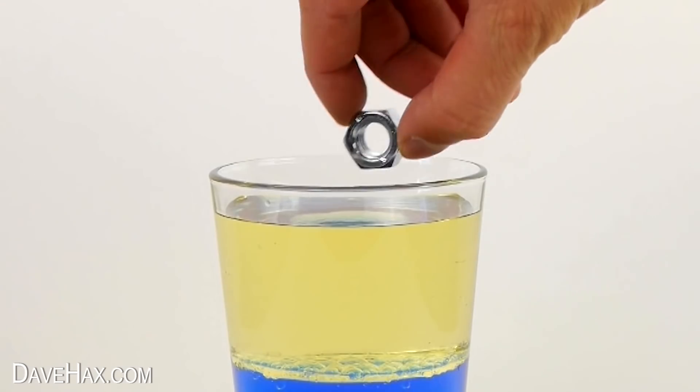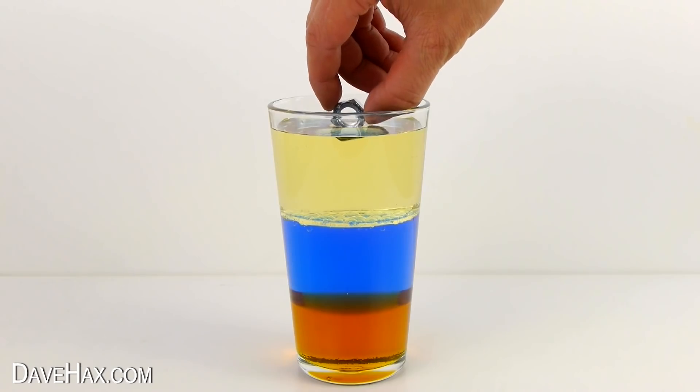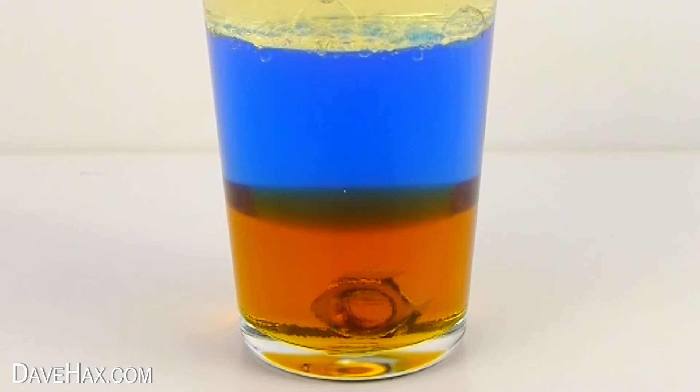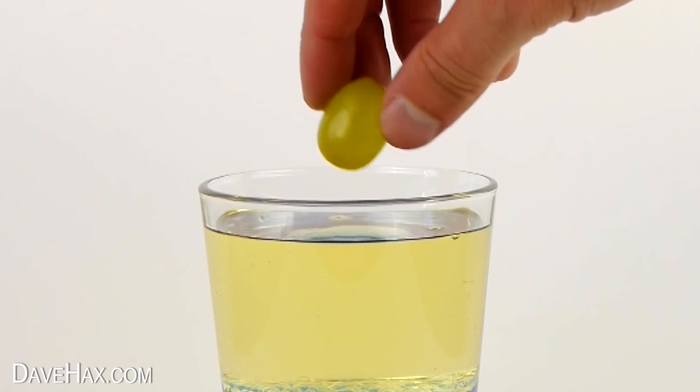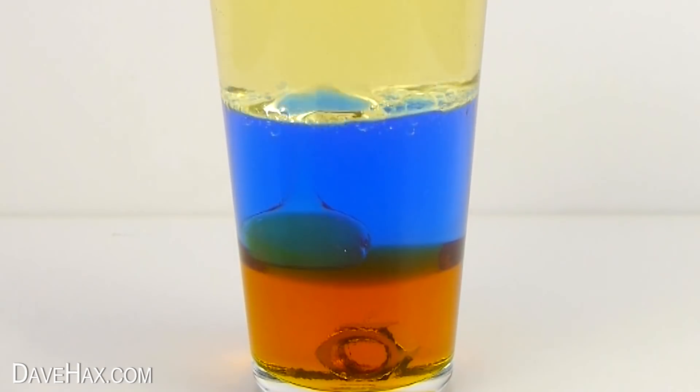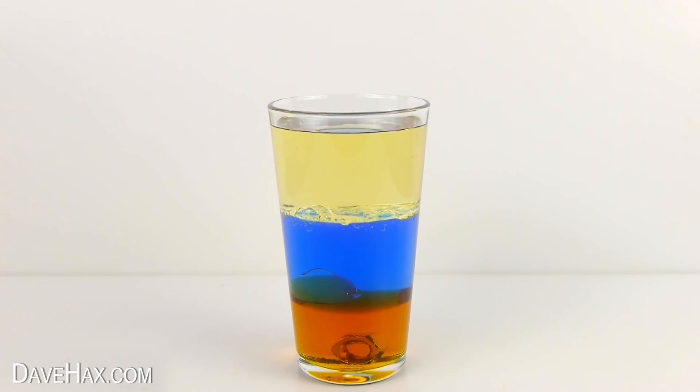If I drop in this dense metal nut, you can see it sinks right to the bottom. But if I drop this grape in, it sinks through the oil and water, but sits on the syrup. This is because the syrup is denser than the grape.